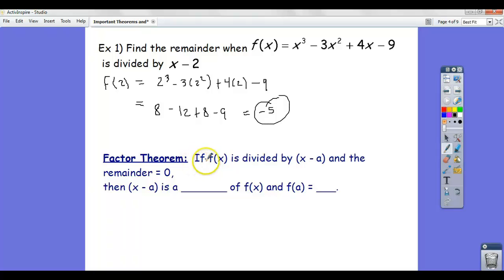The factor theorem is nothing more, it says nothing more than, if you plug in, if I plugged in two, for instance, here, and I got zero as a remainder, then that means that x minus 2 divides this, which you already know. I mean, if you do the synthetic division, and the remainder is zero, then you know that it's a factor. But the factor theorem just says,